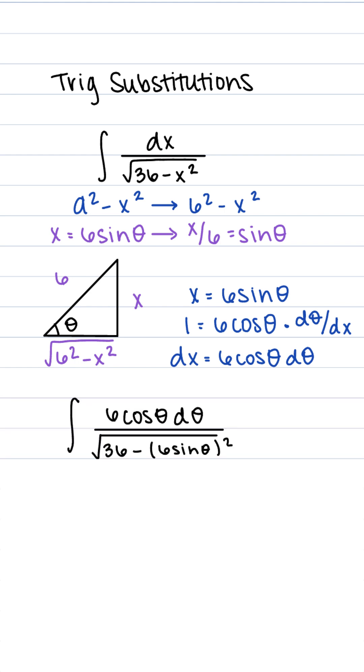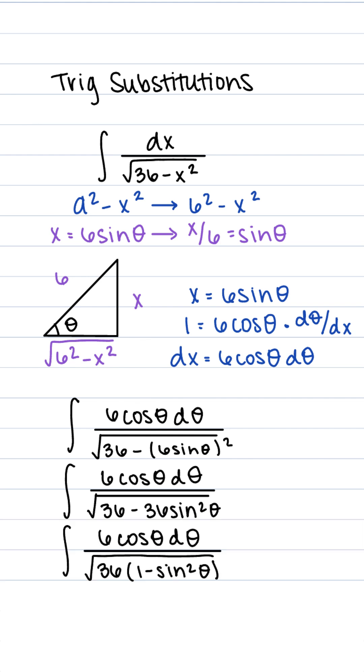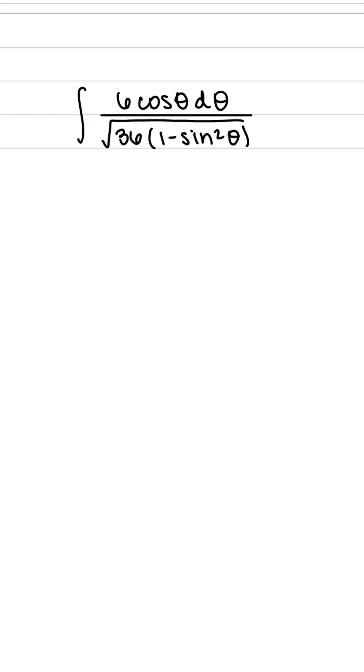So substituting both of these in, this is our new integral. First we can square the 6 times sine theta, and then we can factor out the 36. Notice that 1 minus sine squared theta equals cosine squared theta.